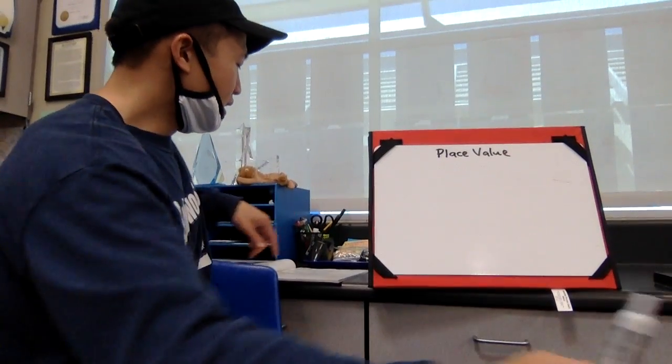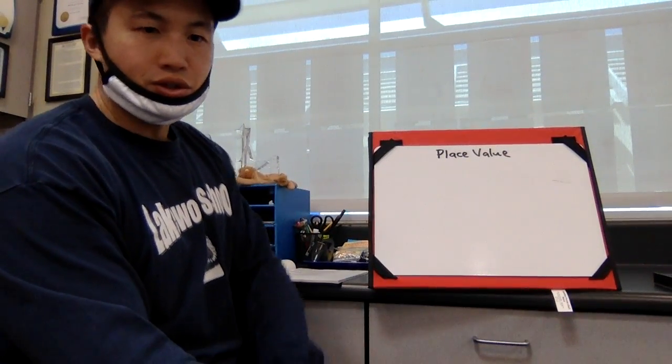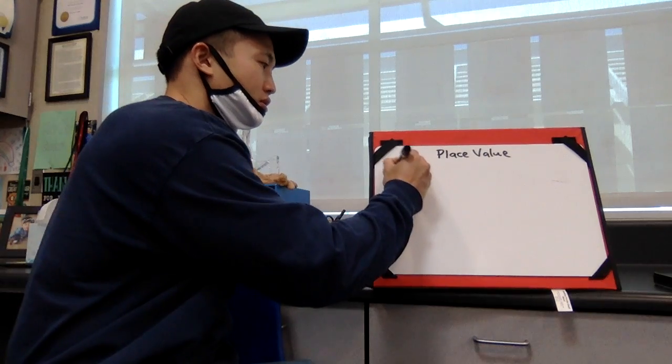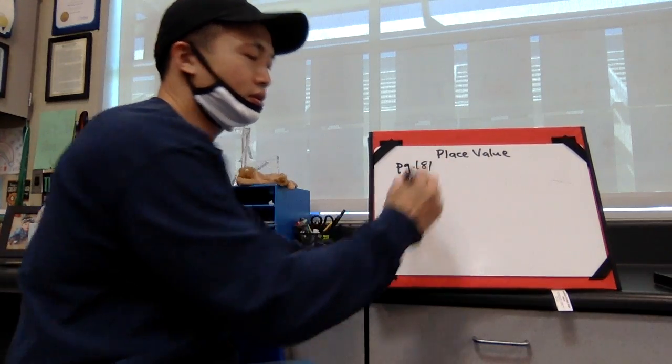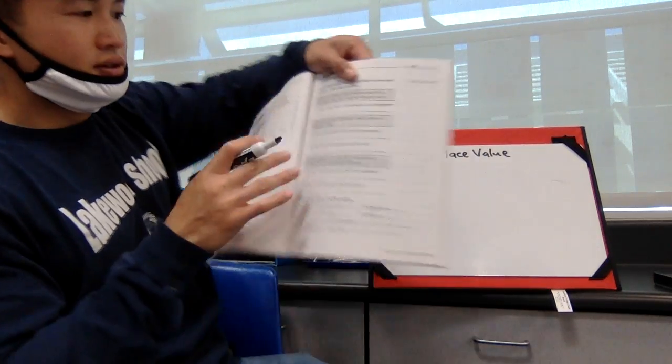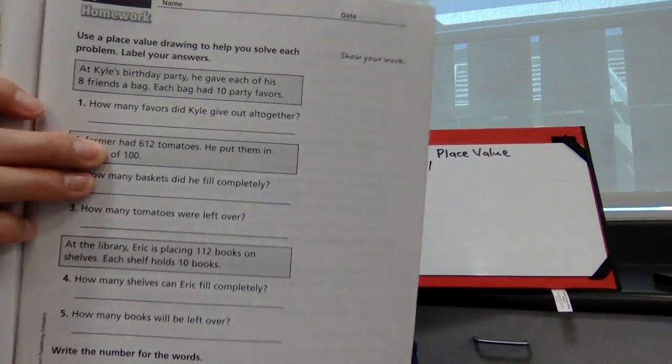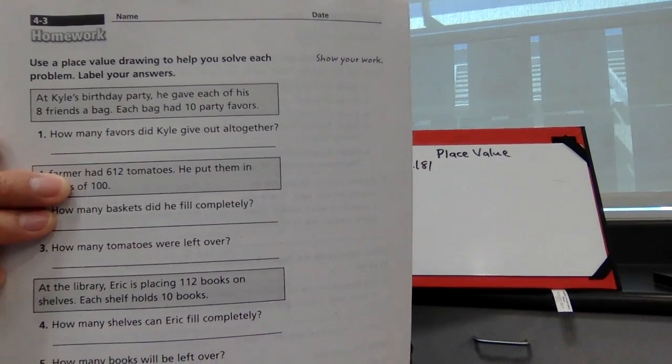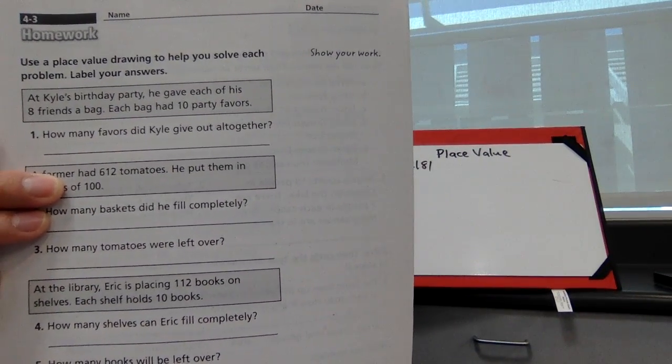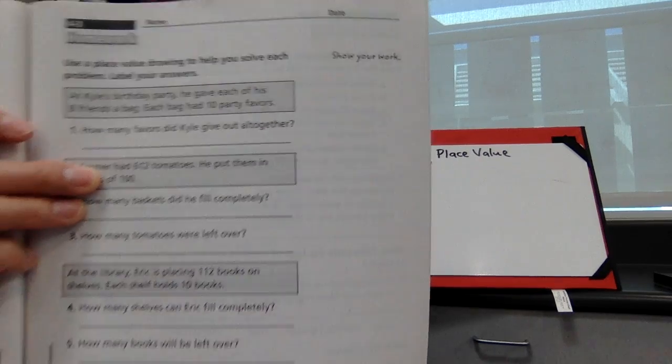So guys, it's me again. Now we're looking at 4-3, which is page 181. And it looks like this. On the top, it says use a place value drawing to help you solve each problem, then label your answers.